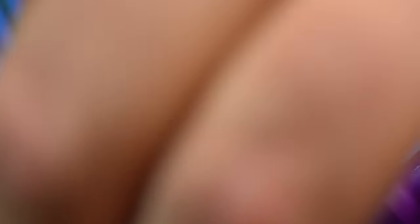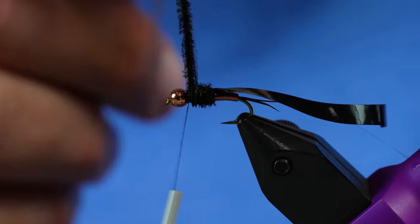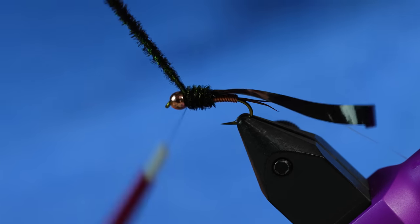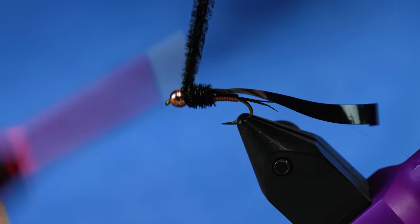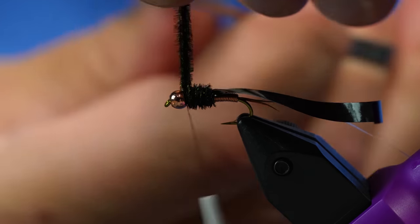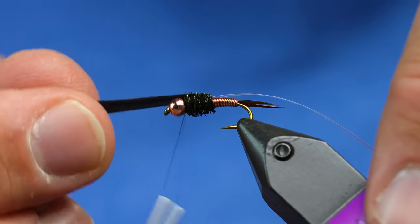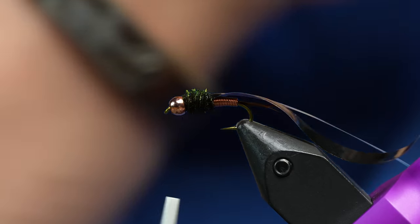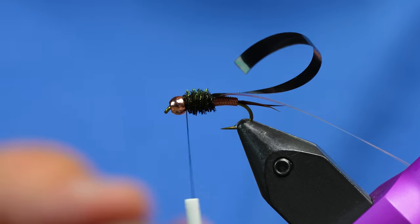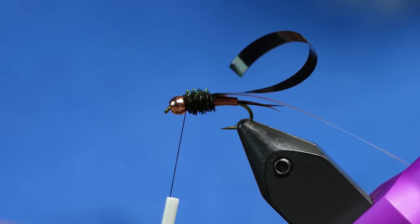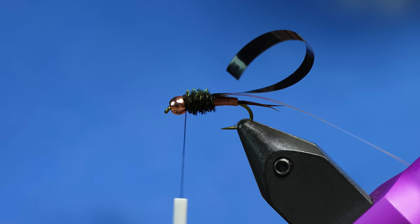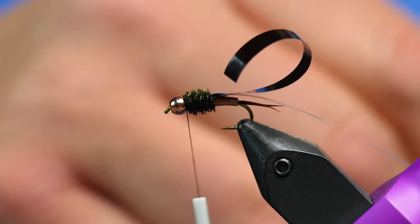All right, now I'm just going to take those fibers and wrap them all at the same time. Stop right behind the bead and tie those off. Let's see how we're looking on our wing case. Yep, that's going to look really good.